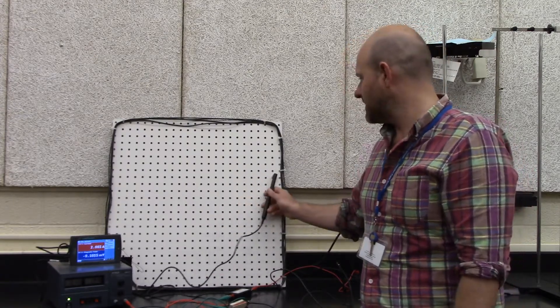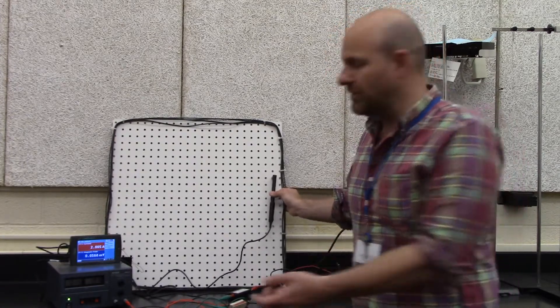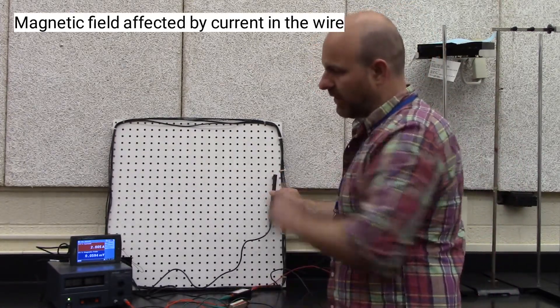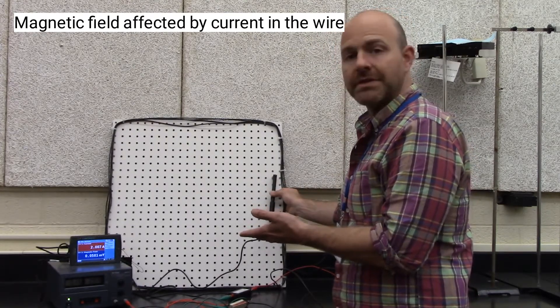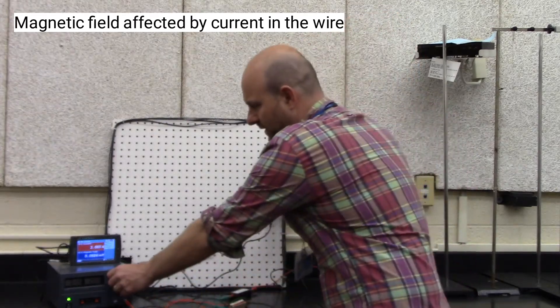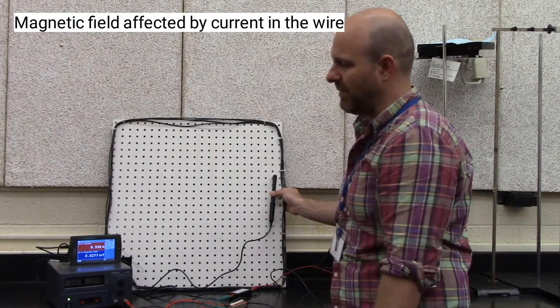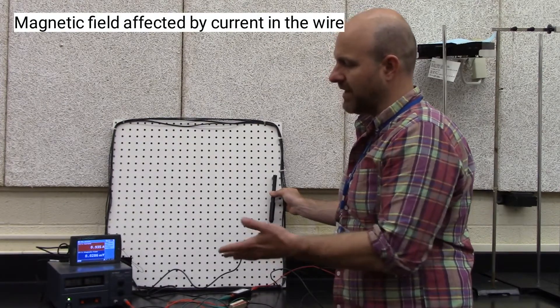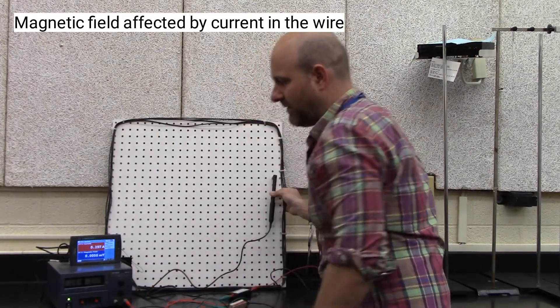And so the next thing I want to do is I want to hold it in this position where I had it and I'm going to turn down the current. So I start with a high current of about 2 amps and we know that this should be proportional to the current so we can turn down the voltage a little bit. We got that down as we drop down to about 1 amp of current. We're now down to 0.02 millitesla as we drop it down even further.